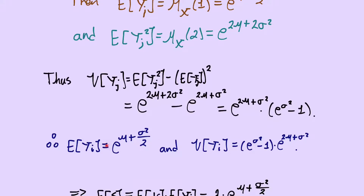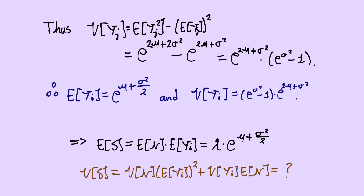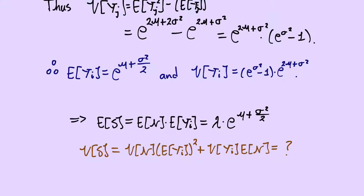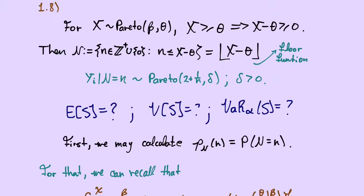So we have the expected value and variance of our severity random variable Y_j. The expected value of S is then E[N] · E[Y] = λ · e^(μ + σ²/2). To calculate the variance of S, we substitute these two values into the variance formula — that is left as homework. It's not difficult to substitute the values and get the explicit formula for the variance of S.